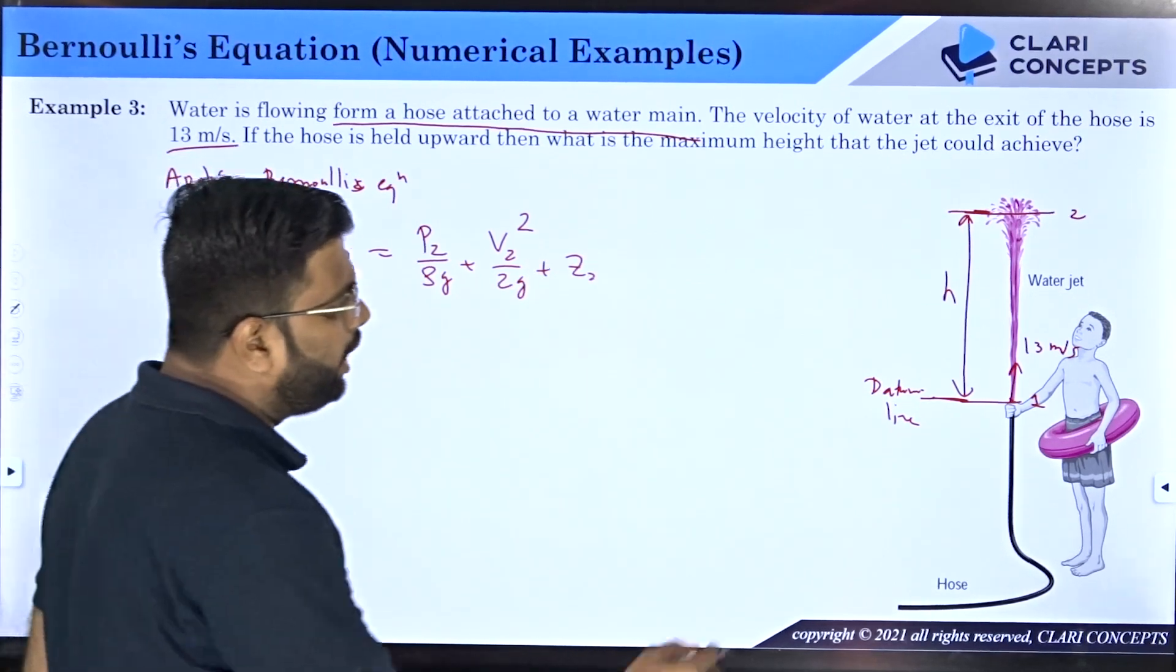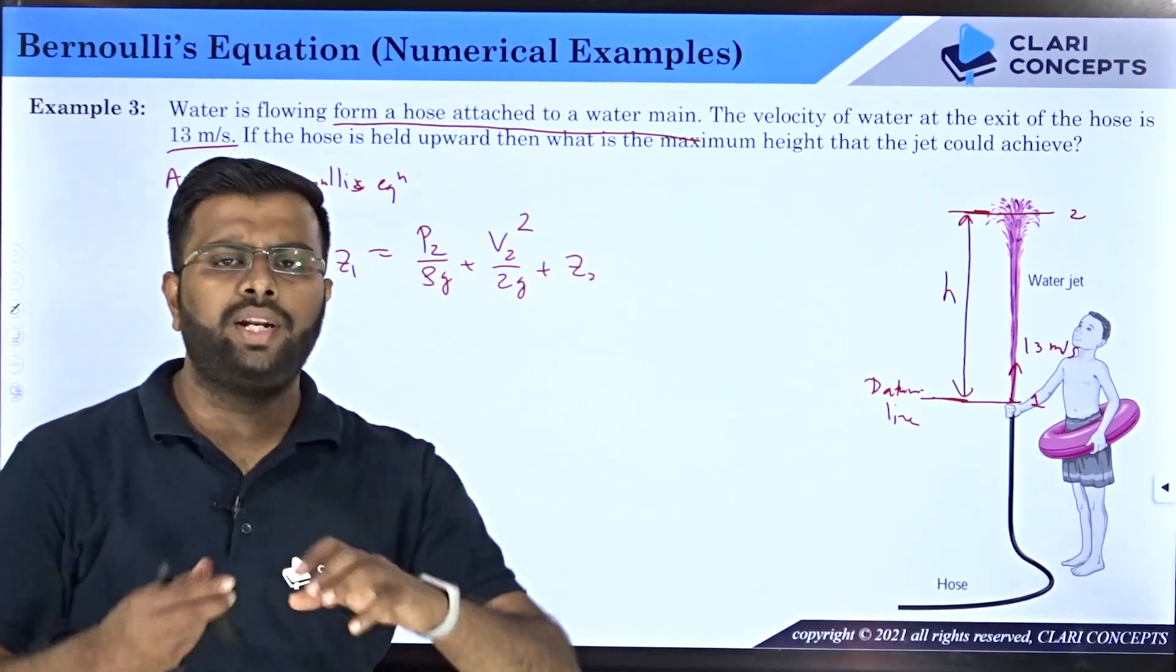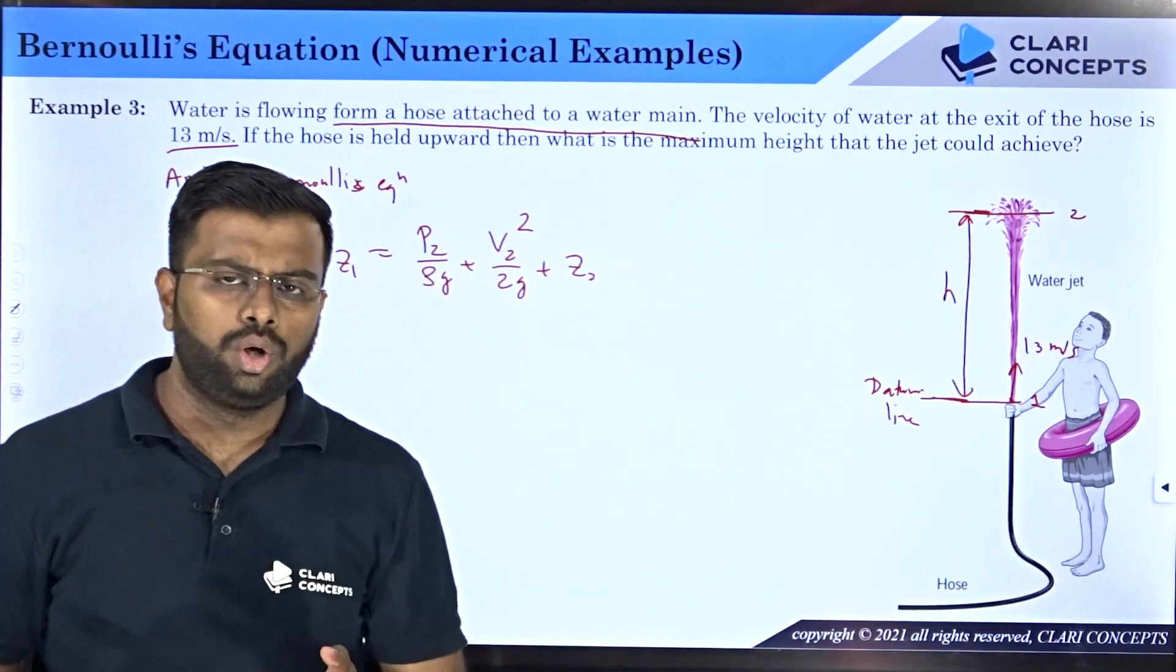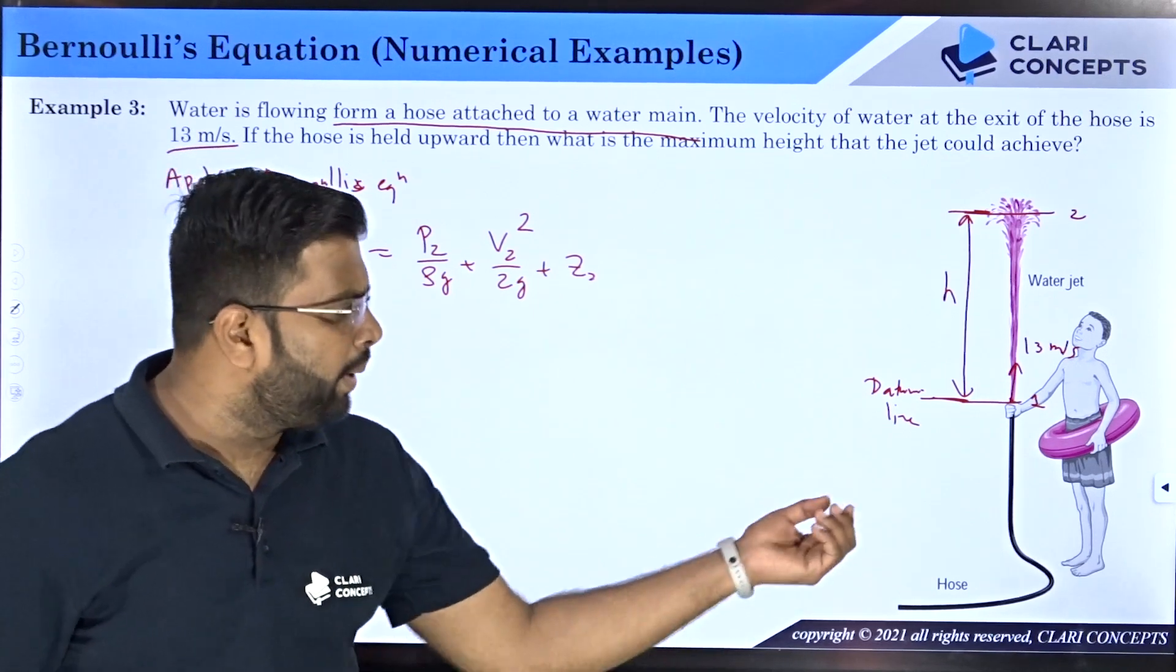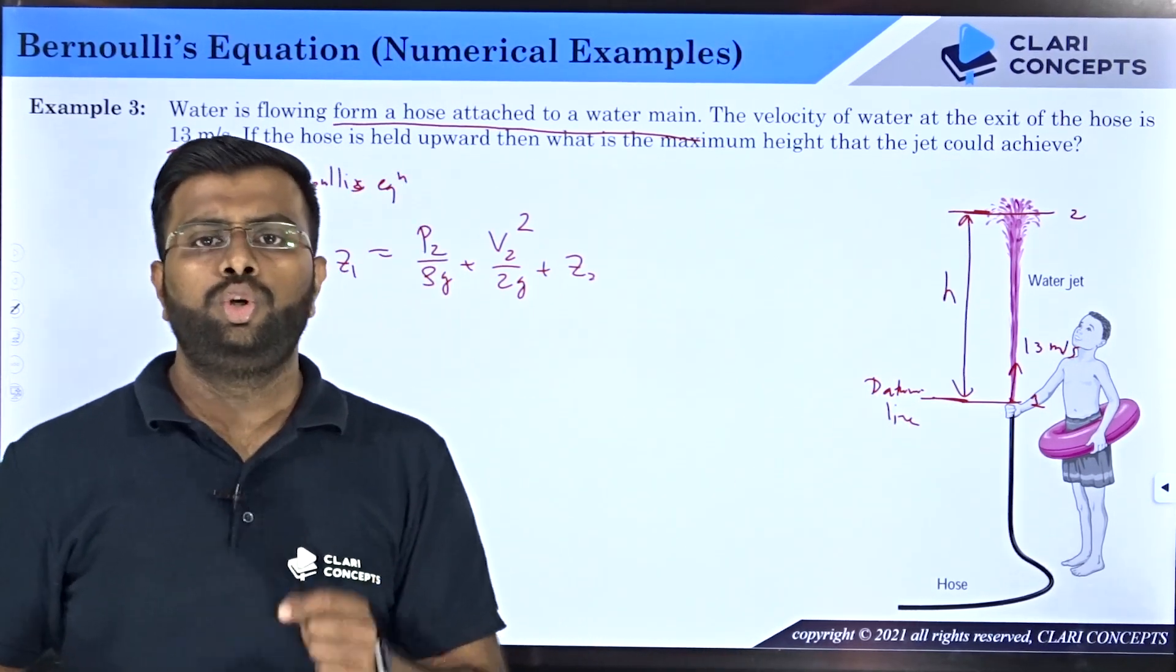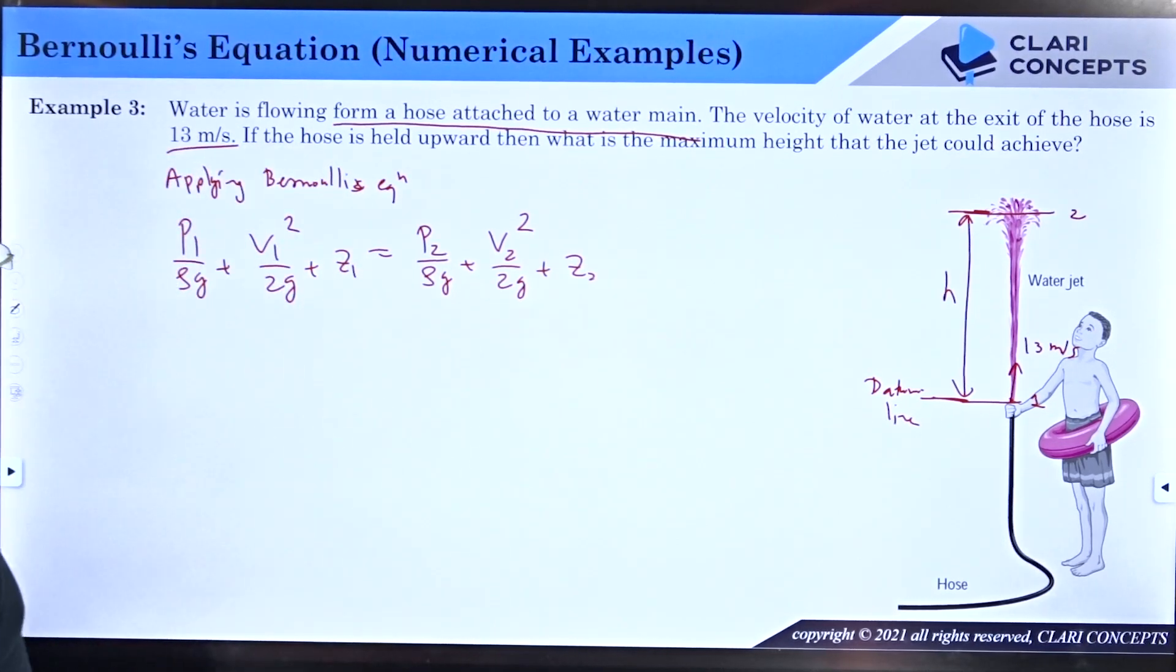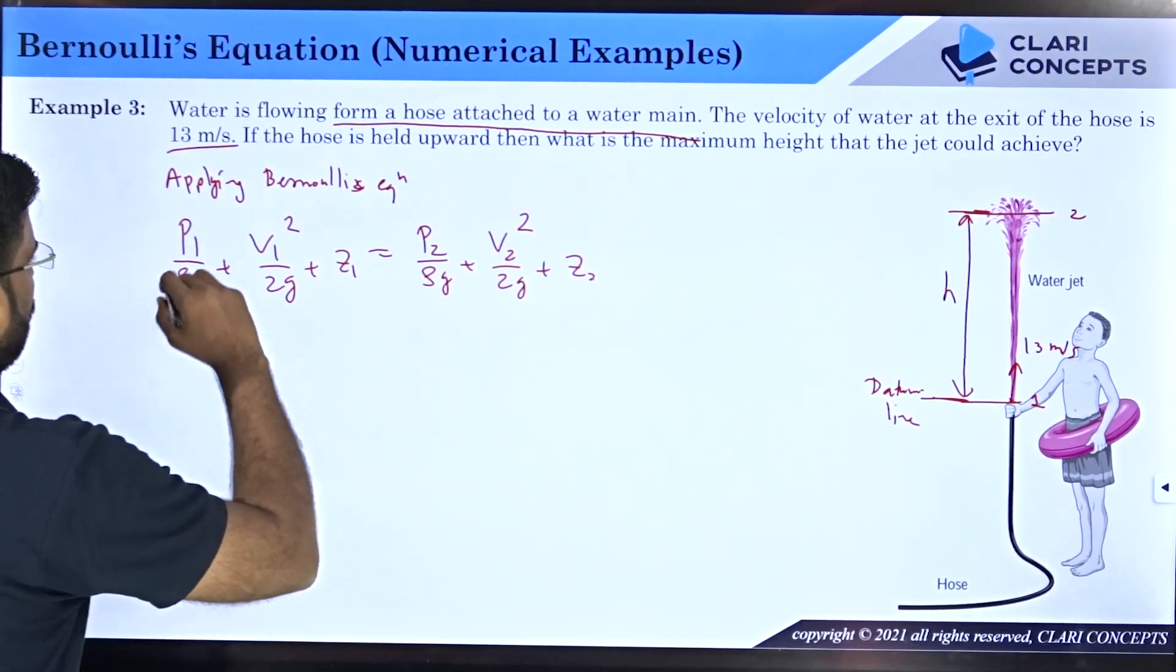p1/(ρg): pressure at one is atmospheric because the moment a water particle comes out of any confinement, any pipe, the moment it comes out, the pressure exposed to it is atmospheric. So the water particle or water jet will be at atmospheric pressure. So p1 is atmospheric, you can say this to be zero pascal gauge.